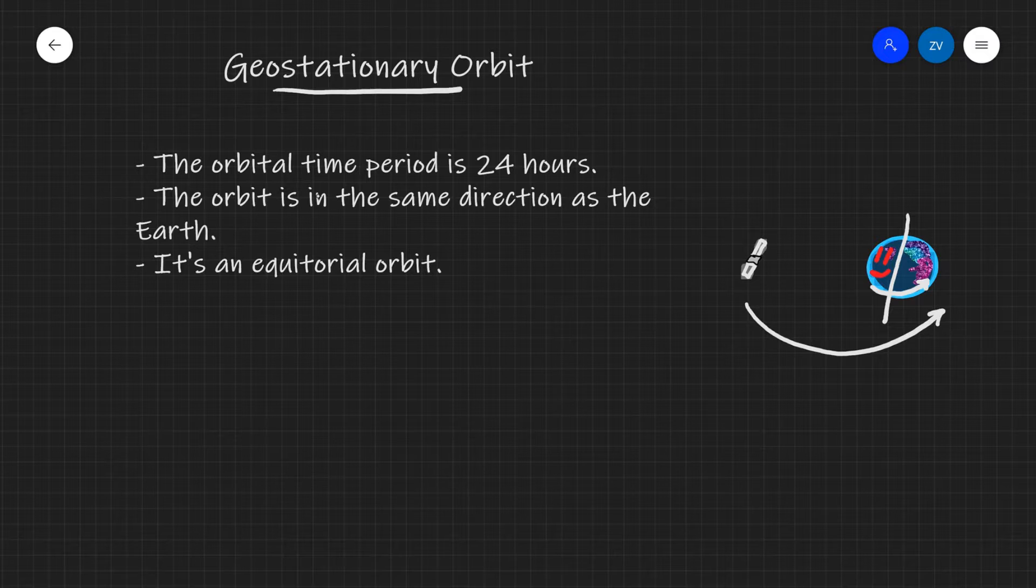The clue is in the name in this case. Geo actually means Earth. So it's an orbit which is stationary with respect to the Earth or with respect to a different planet. For example, if we send an orbiter towards Mars or different planets. But anyways, I digress.